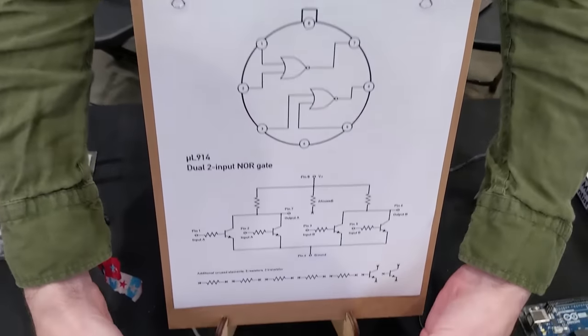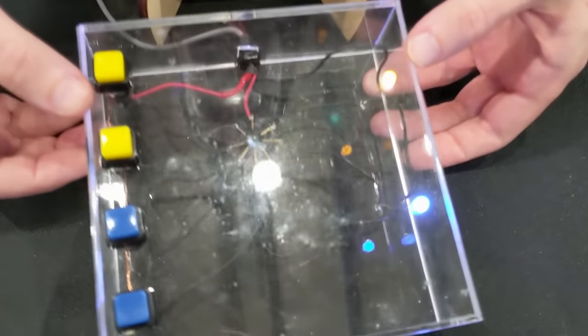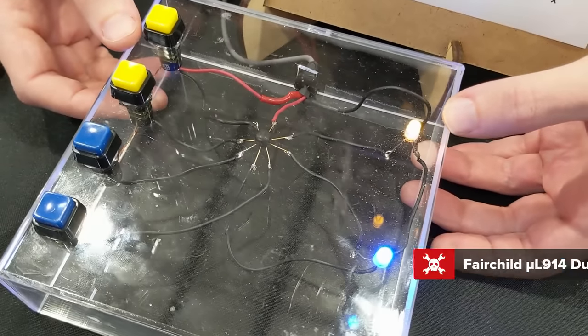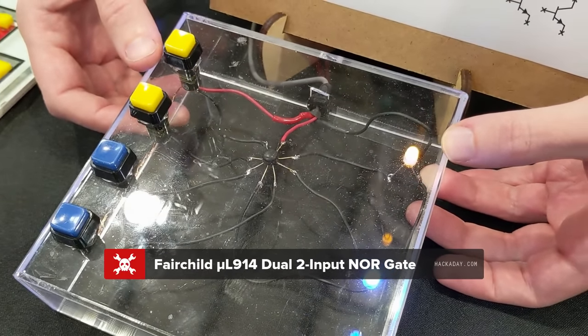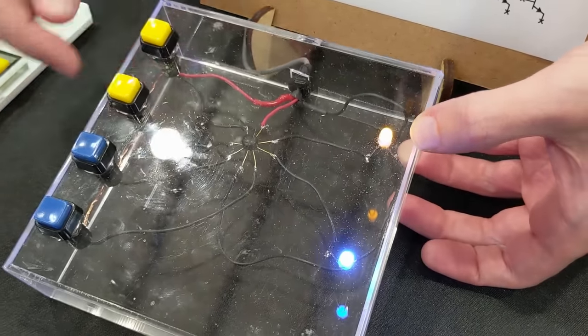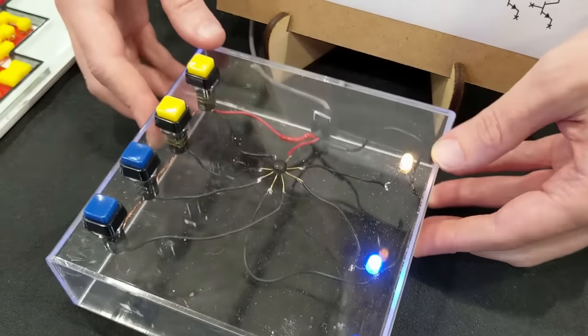So, let's start with the chip. This is a part produced by Fairchild in about the late 1960s, early 1970s. It's a dual two-input NOR chip. It's a little octagonal-looking can with eight legs.